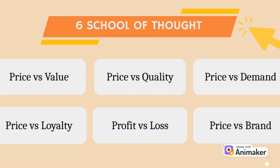Thirdly, is price versus demand. According to the law of demand, when the demand is getting higher and higher, sellers tend to raise the price of their products. Fourthly, is price versus loyalty. Customer loyalty describes the ongoing emotional connection between seller and buyer, which manifests itself through the customer's willingness to engage and repeatedly buy from you over the competitors. Fifthly, is profit versus loss. Profit is the money that sellers have left over after paying business expenses. There are three main types of profit: gross profit, operating profit, and net profit.